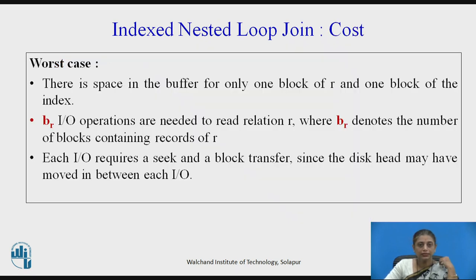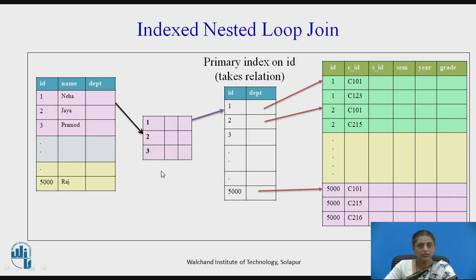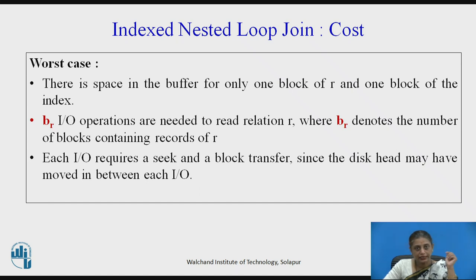Now let us analyze the cost. If both the outer relation and the index of the inner relation fit in main memory, we do not require much cost for block transfers — only one read per relation. But in the worst case, assume there is space in the buffer for only one block of R. We need to bring as many blocks as the outer relation has — in our example, 100 blocks. So BR I/O operations are needed to read the entire relation R, and each I/O operation requires one seek and one block transfer.